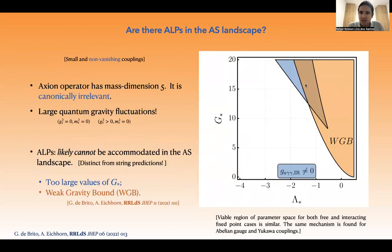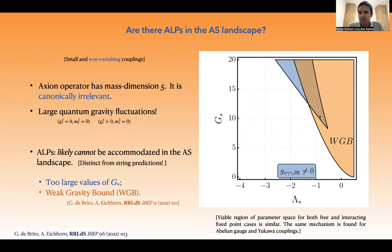Here is the result. If we want axion-like particles to be dark matter candidates, then we need to be in this blue region on the right, where we can see the values that the gravitational parameters should assume.